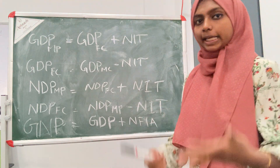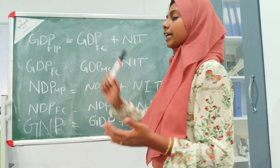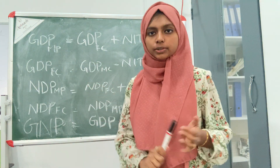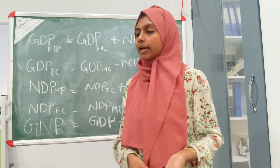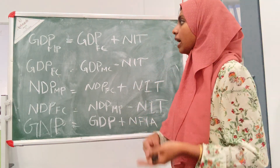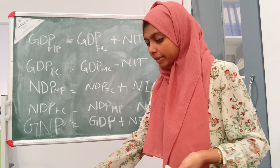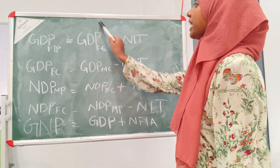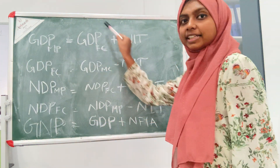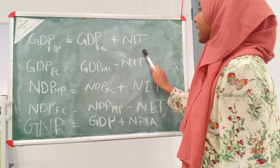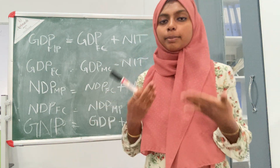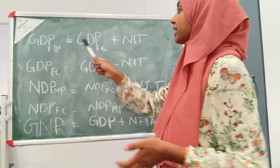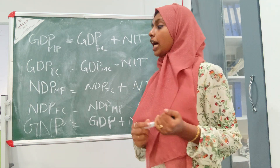GDP at market price and GDP at factor cost — we need to talk about these two ways. GDP at market price and GDP at factor cost are related concepts we are going to discuss.